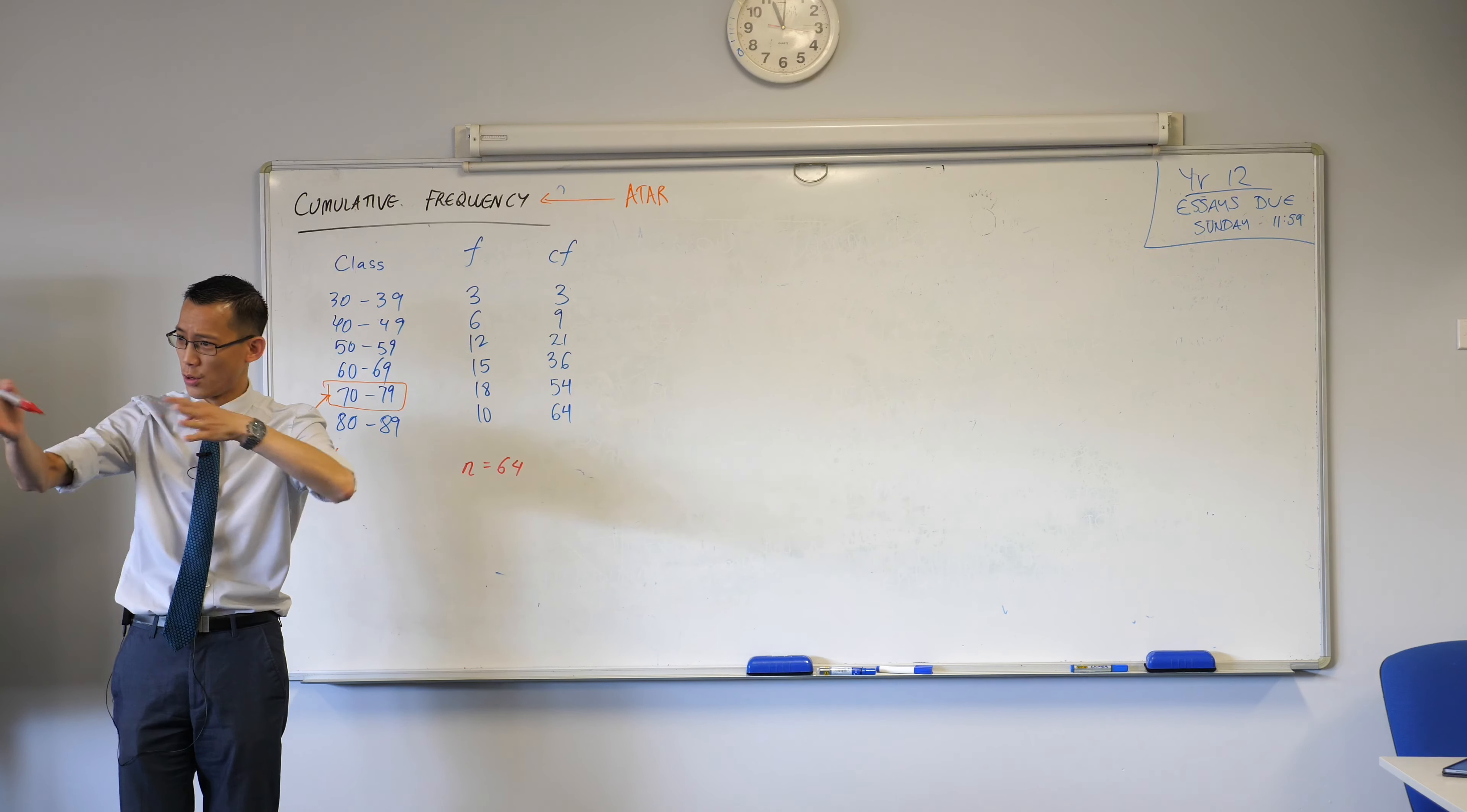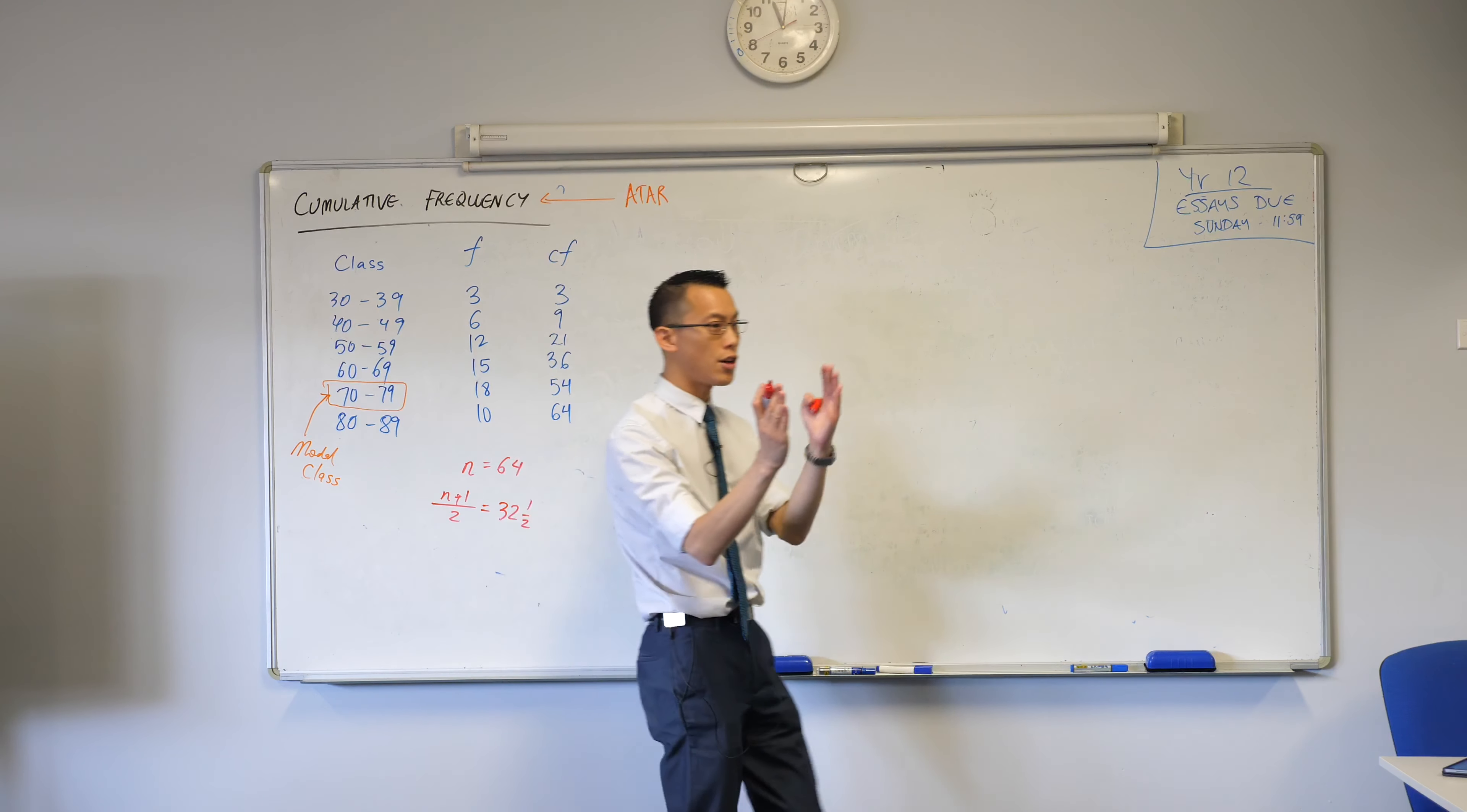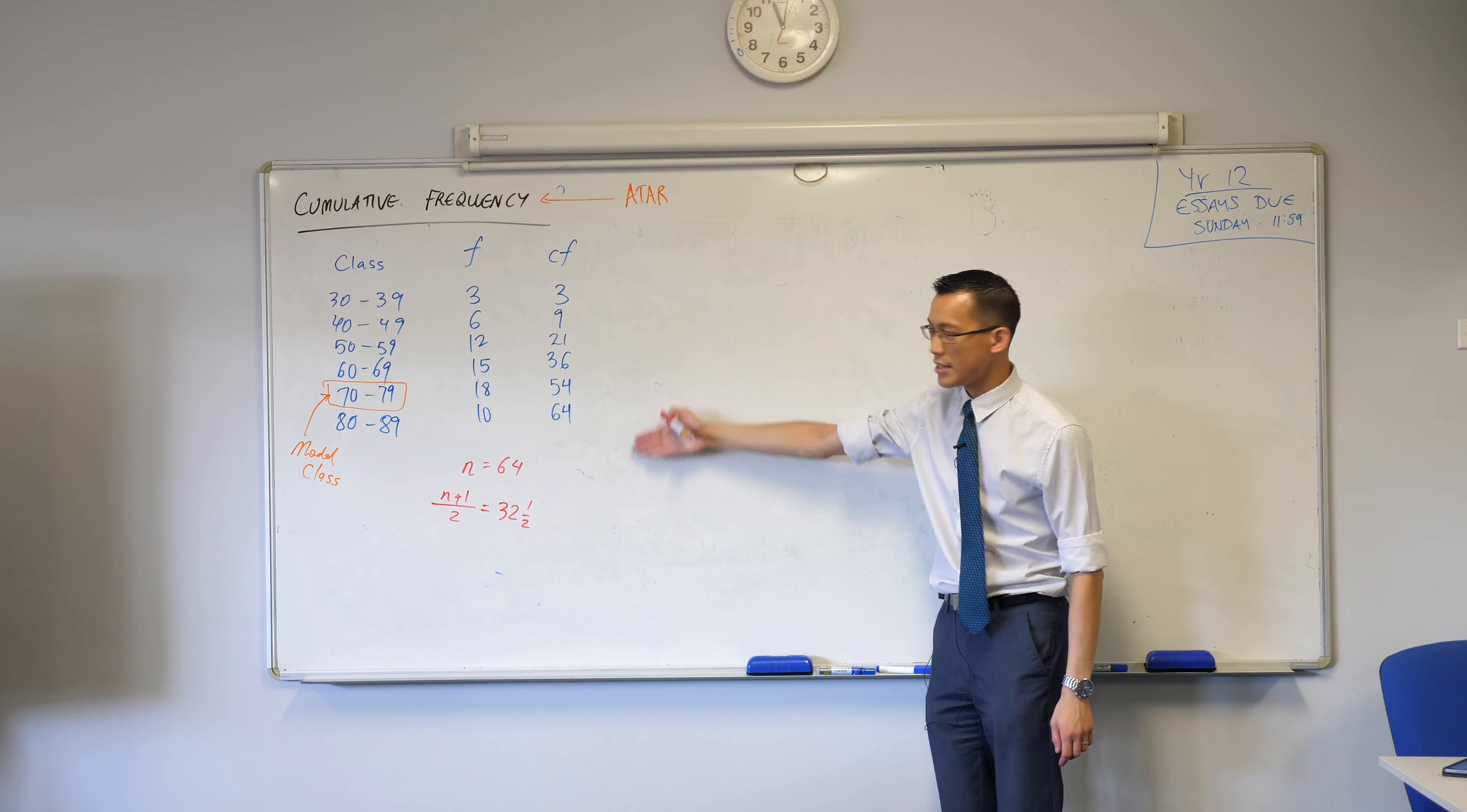N plus one divided by two, that'll be the position of the median. In this case n plus one is 65, you divide that by two gives you 32 and a half, which means between the 32nd and the 33rd scores, whatever that is, that'll be your median. If you had an odd number, suppose you had n equals five, n plus one will be six, so six divided by two will give you score number three which is bang on in the middle. This tells us the median is going to be between 32 and 33.